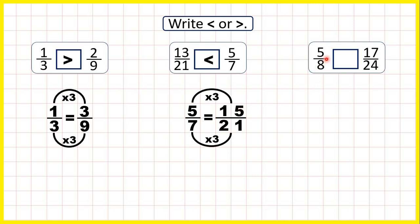Now we have 5/8 and 17/24. 24 is in the 8 times table, so we find a fraction equivalent to 5/8 with a denominator of 24. We use multiplication or division to find equivalent fractions, and 8 times 3 is 24. What we do to the denominator, we need to do to the numerator as well. 5 times 3 is 15. That's less than 17, so 5/8 is less than 17/24.